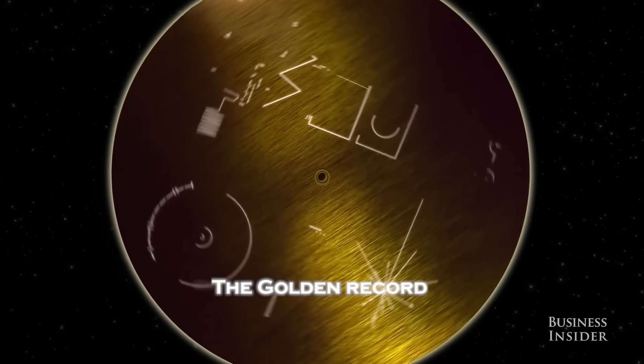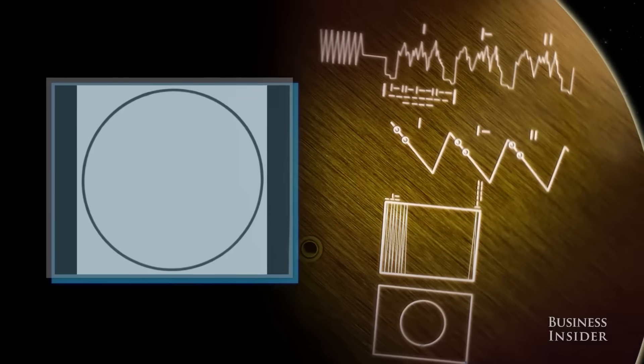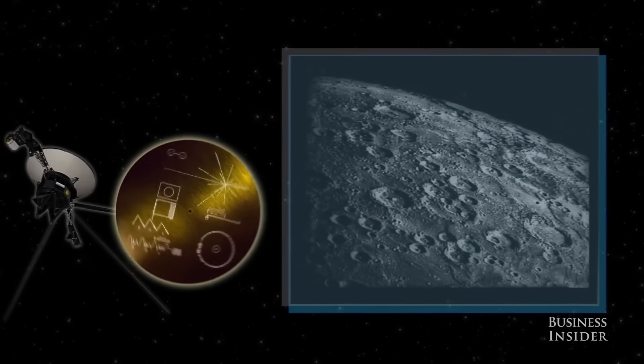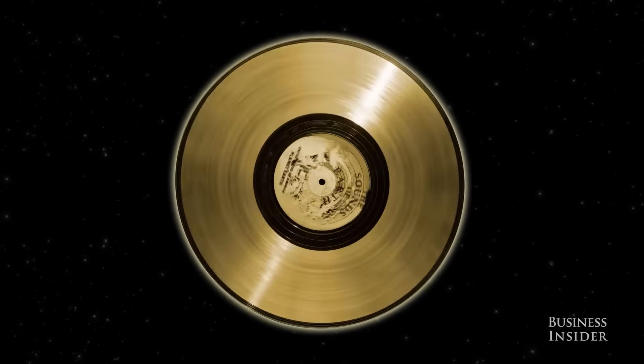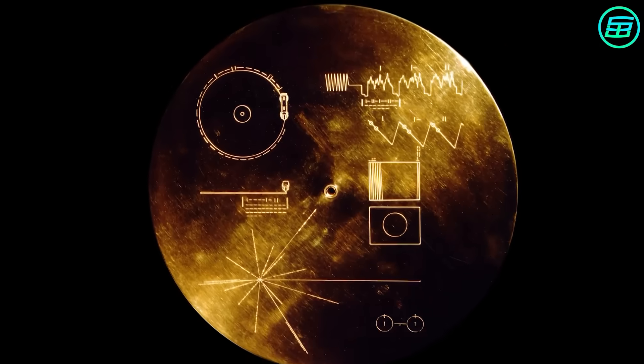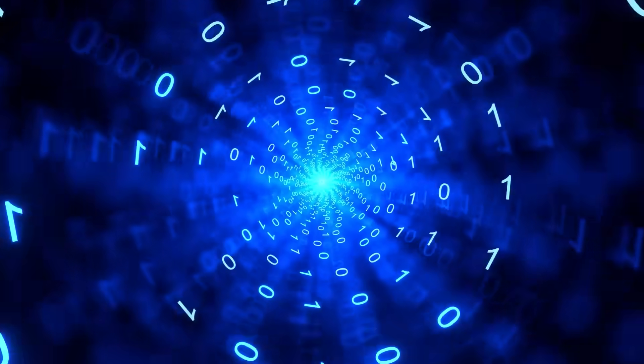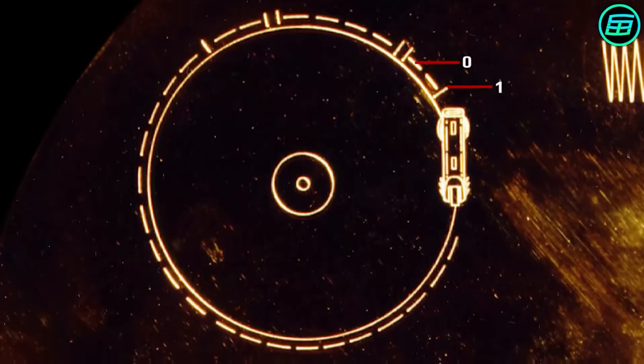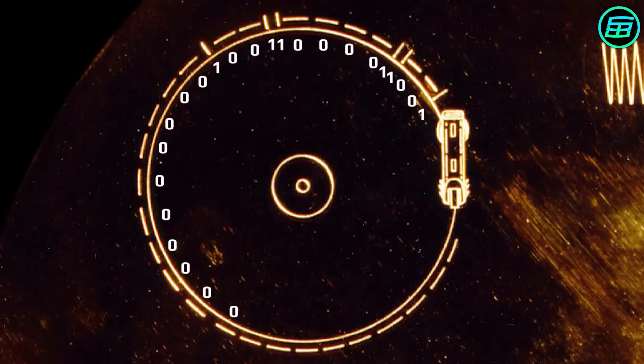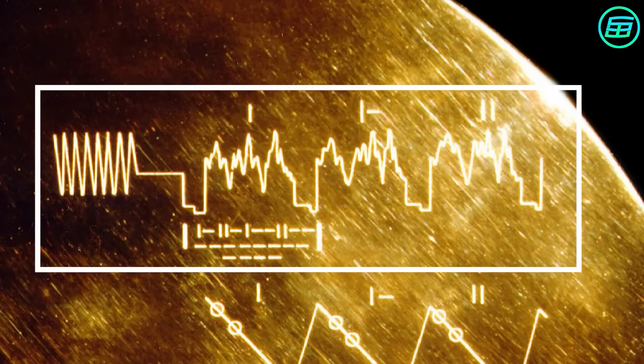Voyager 1 famously carries the Golden Record, a phonograph containing music, sounds, images, and scientific data from Earth, intended to communicate our civilization to any potential discoverers. But what few people know is that the original digital blueprint of the record includes additional metadata never officially released to the public: coordinates, quantum encoding maps, and even time-based logic puzzles embedded in its analog spiral.